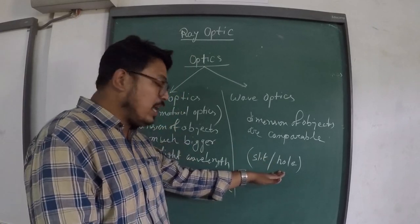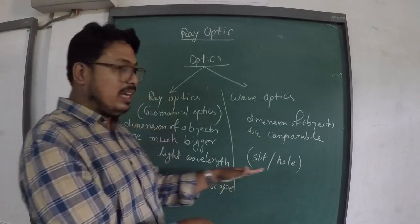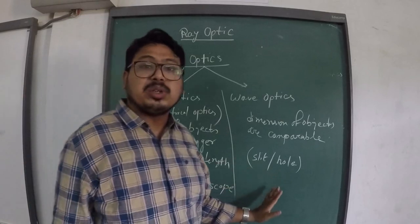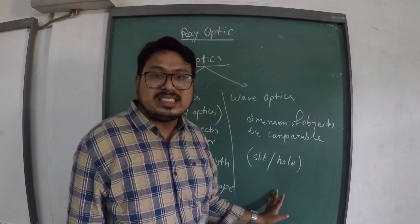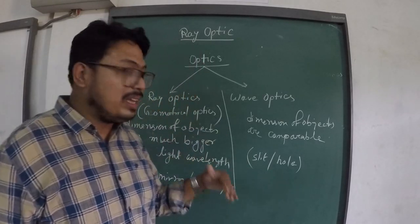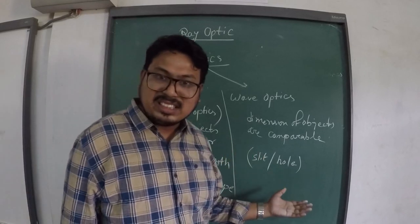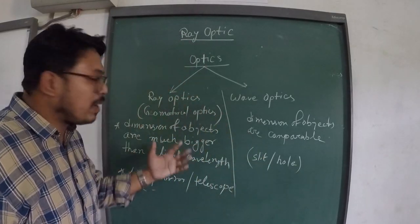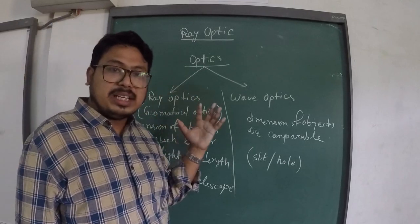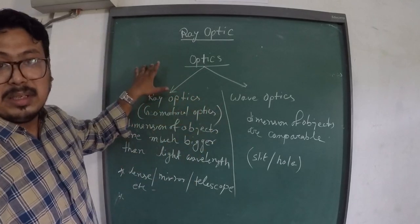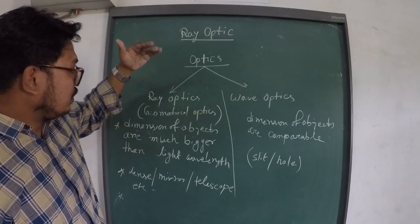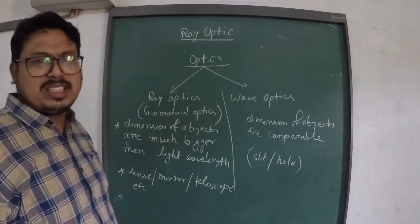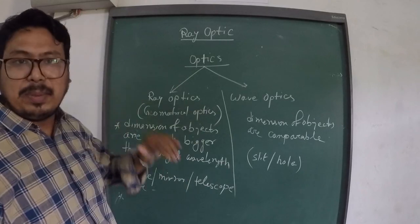The phenomena we study in ray optics are reflection and refraction. In wave optics, we study interference and diffraction. We have already done reflection in smaller classes. Now let's start with ray optics first.